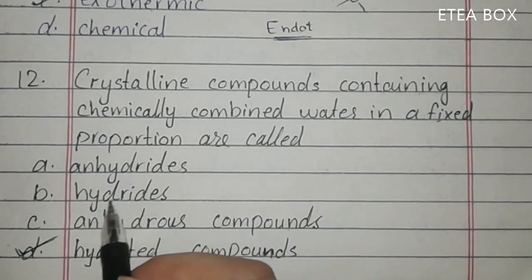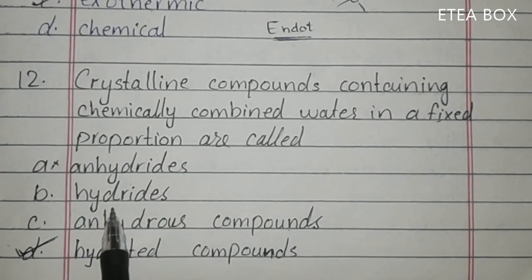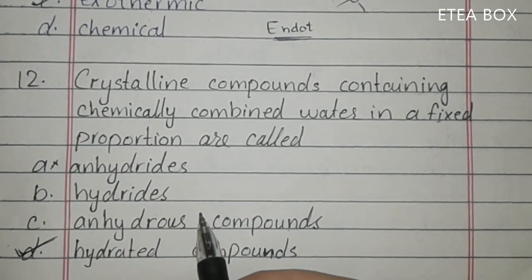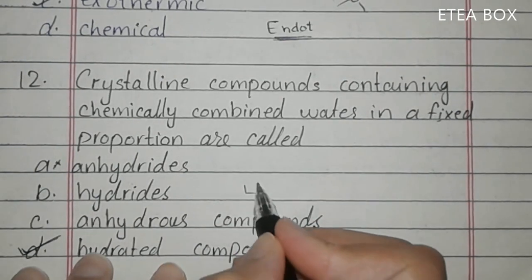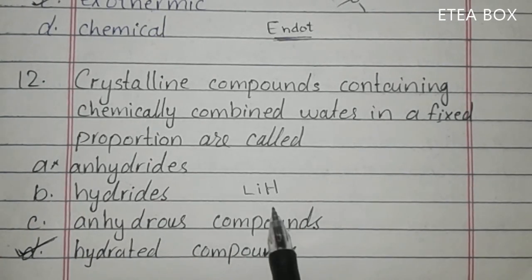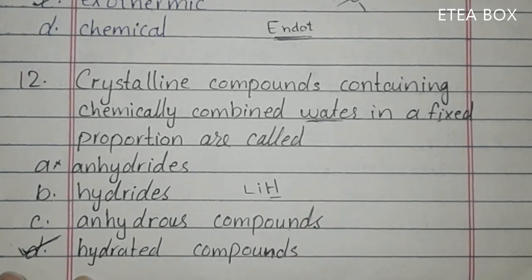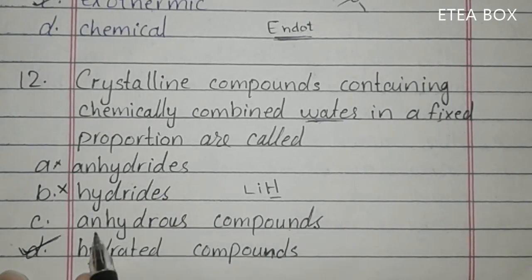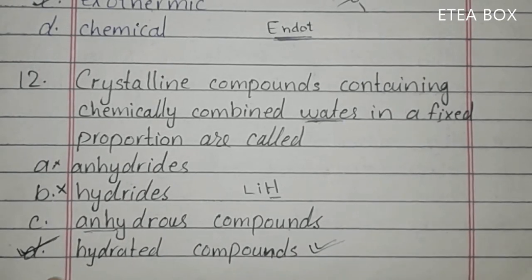MCQ 12: crystalline compounds containing chemically combined water in a fixed proportion are called hydrated compounds. Option A (anhydrates — water removed) is incorrect. Option B (hydrides — hydrogen combined with other elements, like lithium hydride) is incorrect because that has no water. Option C (hydrates) is incorrect in that context. Option D (hydrated compounds) is the correct answer.